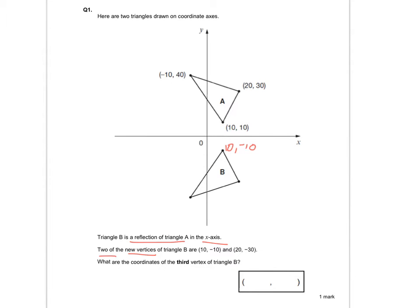The second vertex was (20, -30). If I look at the numbers, if that one's 20 on the x-axis it's going to be positive 30 on the y-axis. If I draw a straight line down, everything along that line is going to equal 20 on the x-axis, so I can see that one is going to be (20, -30) because the reflection is the same distance away from the x-axis — that's 30 points away, so here it's going to be 30 points away in the negative numbers.